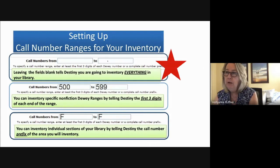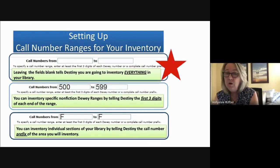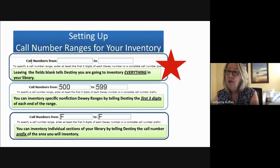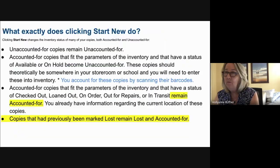Everything — if you leave the call number range blank, you have set up an inventory that will make Destiny look for all call numbers. That means it's going to make you identify every single copy in your library, and if you don't do that, it's going to set those items to lost. Sometimes you might be able to do every single section in your library, but if you're not doing that, don't leave this blank. This is how people erase their collections.